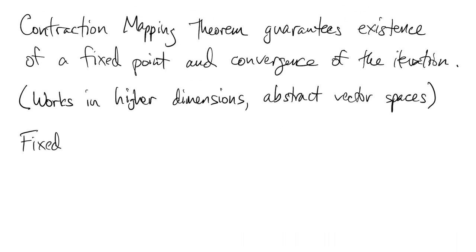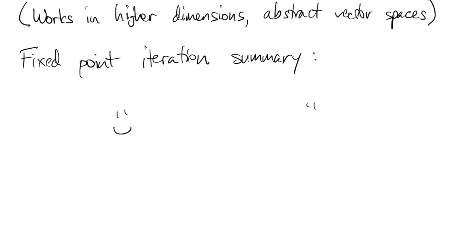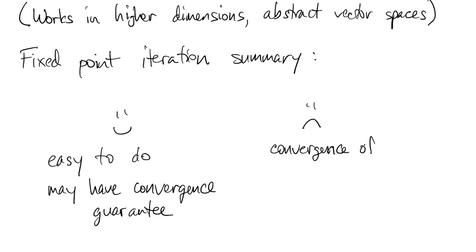So if we summarize the good points and the bad points of fixed point iteration: on the good side of things, it's easy to use and you may be able to get a convergence guarantee. But on the other hand, that guarantee can be hard to come by and it might not even be true depending on your particular problem. And more to the point, it's relatively slow compared to what we're going to do next.